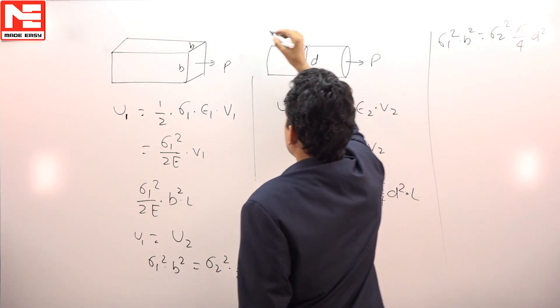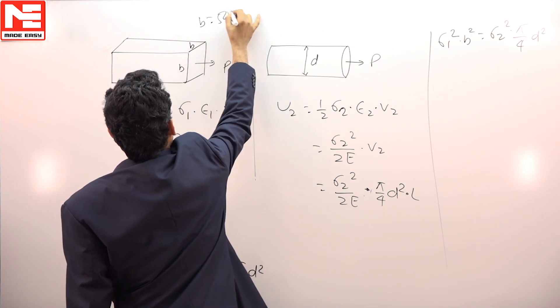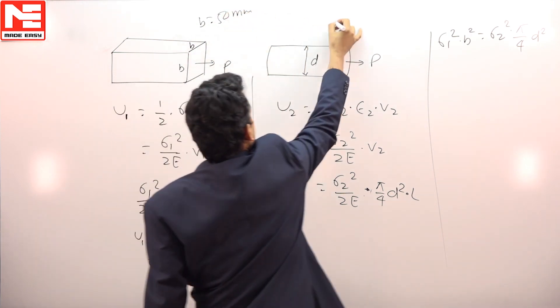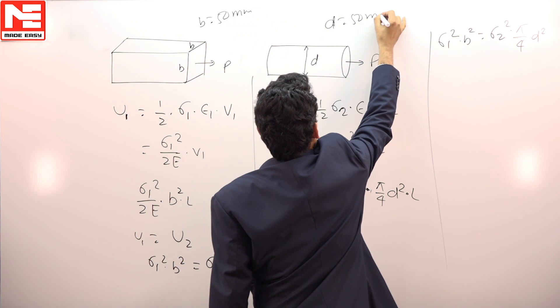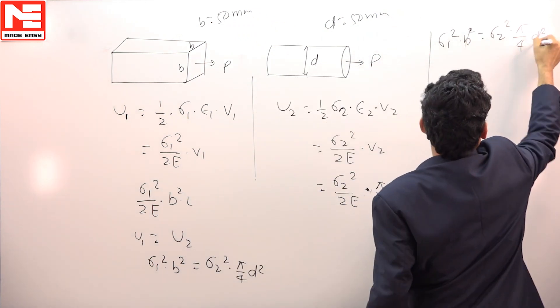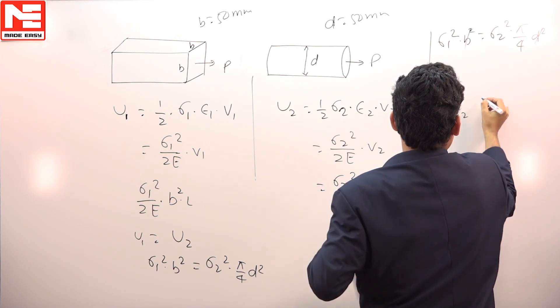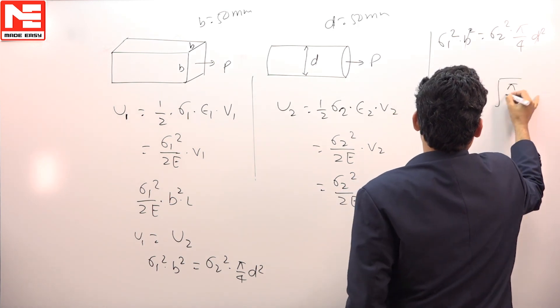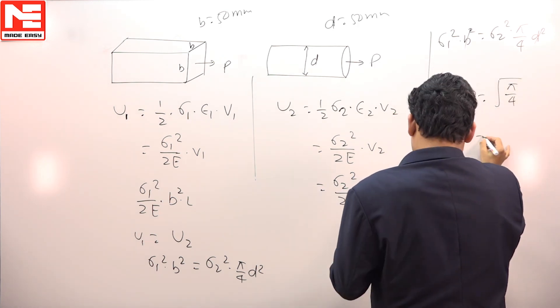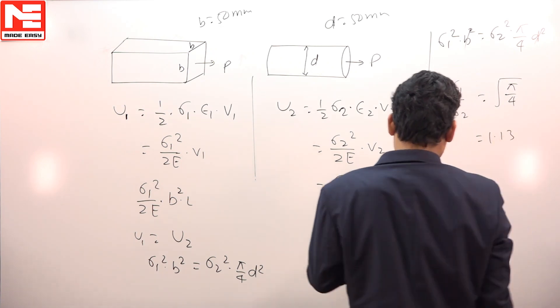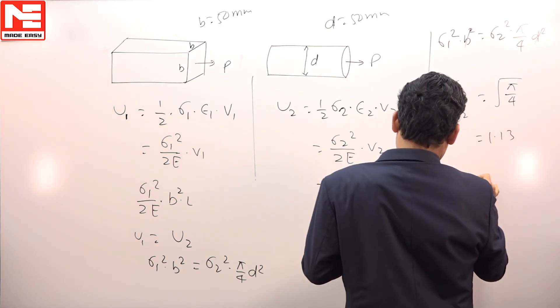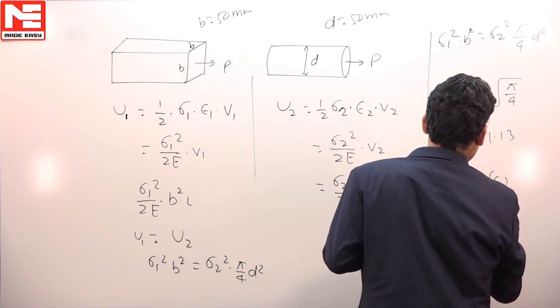Now since in this case the width was 50 mm, also diameter is 50 mm, therefore this can be canceled out. Therefore, σ₁/σ₂, if you want to find this should be √(π/4), this should be equal to 1.13. Therefore the answer should be C, that is third option. Thank you.